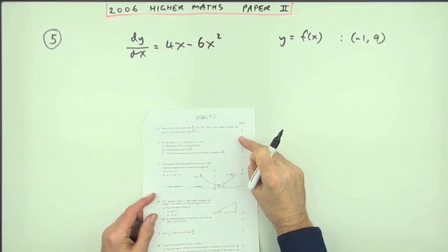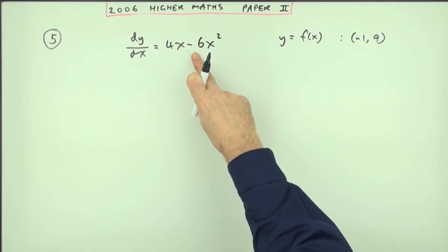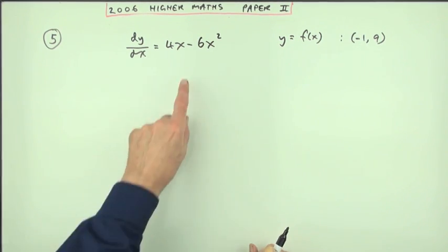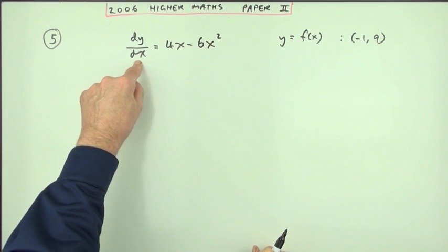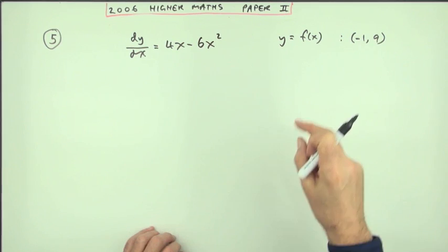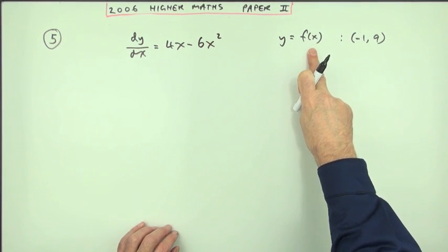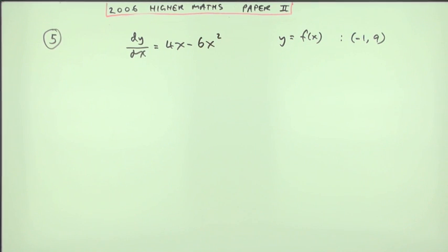Number five from the 2006 Higher Maths Paper 2. Here you've got the equation for the derivative of a curve. You've defined the equation of the curve itself, given that the curve passes through this point.